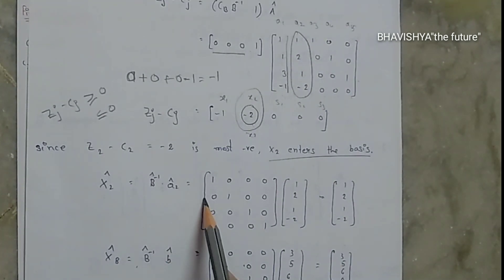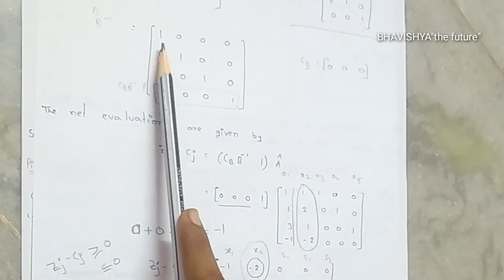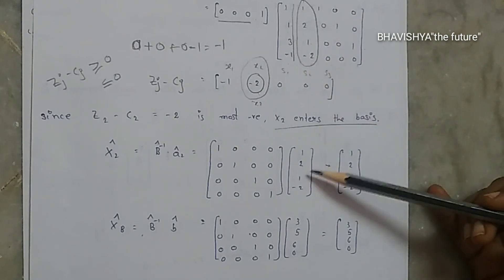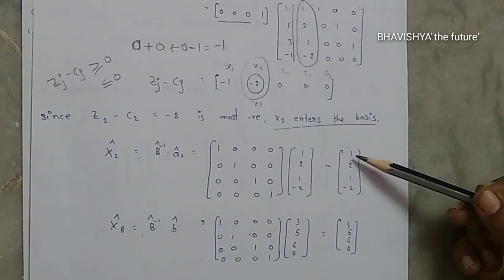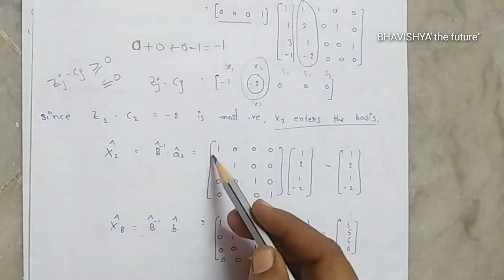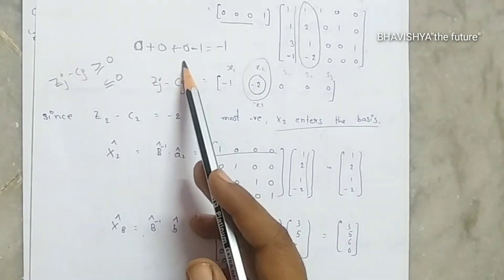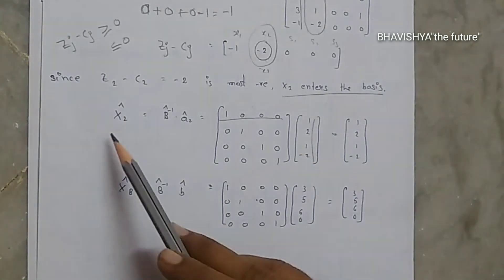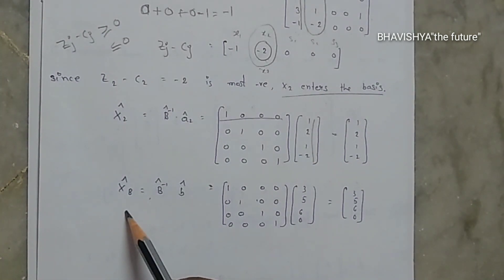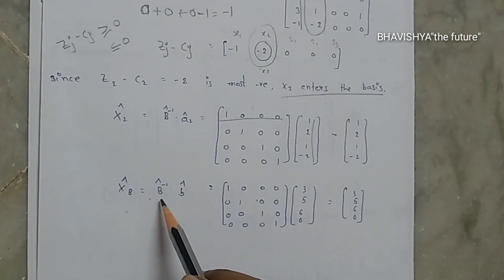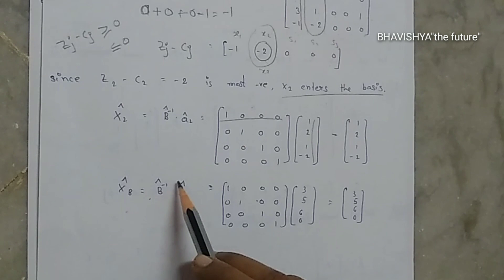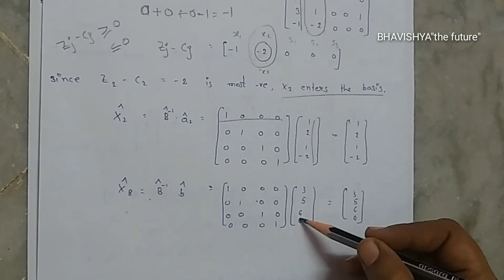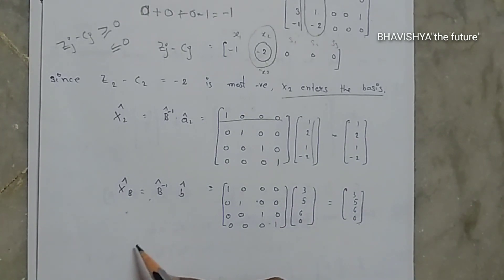From A-cap, the A2 column (for x2) is [1, 2, 1, -2]. Multiplying B-inverse-cap by A2-cap gives X2-cap = [1, 2, 1, -2]. Similarly, XB-cap = B-inverse-cap · b-cap = [3, 5, 6, 0].